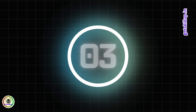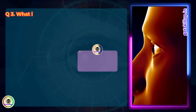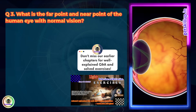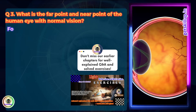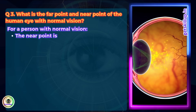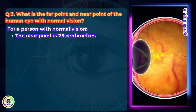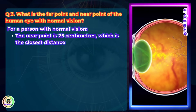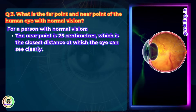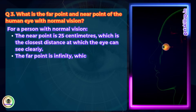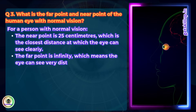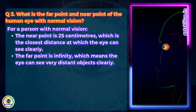Question 3: What is the far point and near point of the human eye with normal vision? For a person with normal vision, the near point is 25 cm, which is the closest distance at which the eye can see clearly. The far point is infinity, which means the eye can see very distant objects clearly.